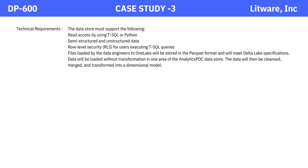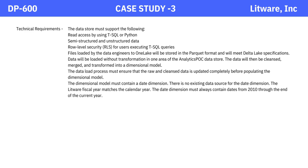Technical requirements: The data store must support read access by using T-SQL or Python, semi-structured and unstructured data, and row-level security (RLS) for users executing T-SQL queries. Files loaded by the data engineers to OneLake will be stored in the Parquet format and will meet Delta Lake specifications. Data will be loaded without transformation in one area of the Analytics POC database. The data will then be cleansed, merged, and transformed into a dimensional model. The data load process must ensure that the raw and cleansed data is updated completely before populating the dimensional model.